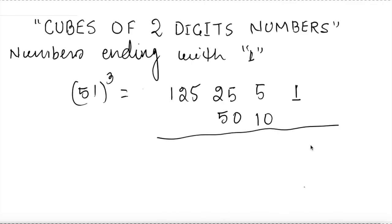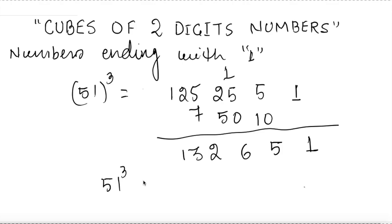Let me take 51³. I write 5 and 1, square of 5 = 25, cube of 5 = 125. Doubling: double 25 = 50, double 5 = 10. Write last digit 1 as it is; 5 + 10 = 15, carry 1; that gives 76, so 6 comes here and 7 carries; 132 results. So 51³ = 132651.